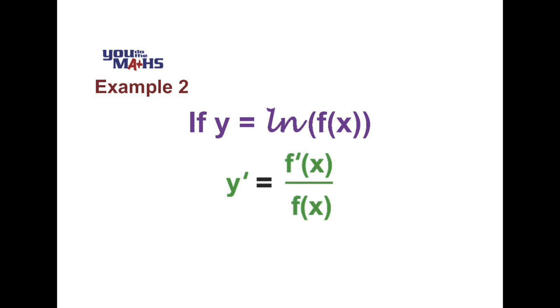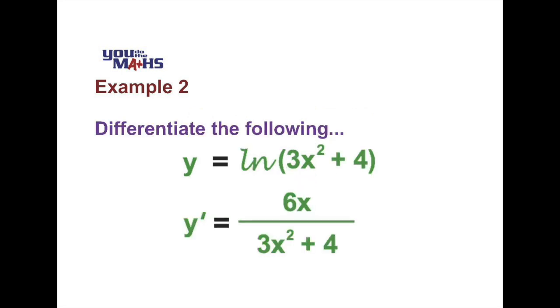So what we have is the derivative is the original expression as the denominator and the derivative of what's inside the log as the numerator. So we can see in this case the expression inside the log is 3x squared plus 4. That goes to the denominator of our derivative.